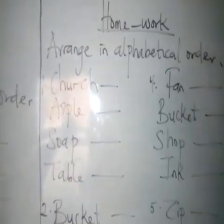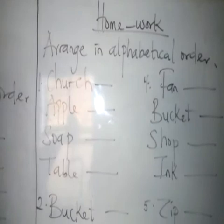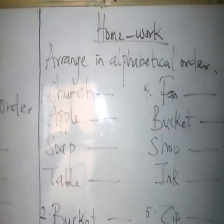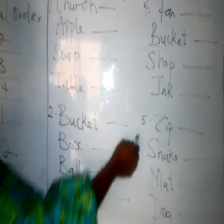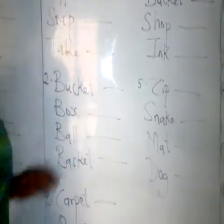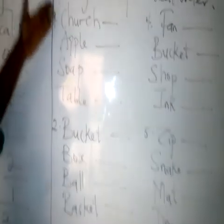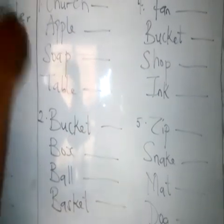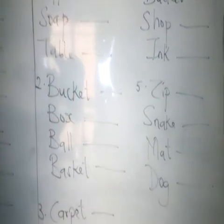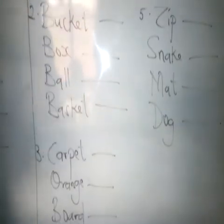It brings us to our assignments. Here we are going to arrange in alphabetical order. Number 1: Church, Apple, Soap, Table. Number 2: Bucket, Box, Board, Basket. Number 3: Puppet, Orange, Board, Teacher. Number 4: Fan, Rockets, Shoe, Ink. Number 5: Zebra, Snake, Matt, and Dog. Follow the alphabet just like the examples we did. Thank you and God bless.